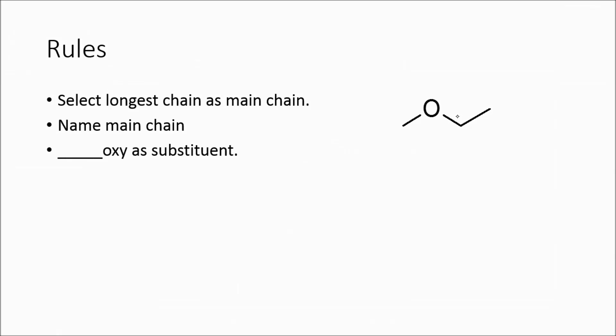Let's look at this example. Here I've got a methyl here and an ethyl here. This is the longer chain, so this is my main chain. And the name of this will be ethane.